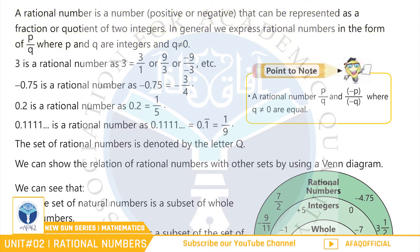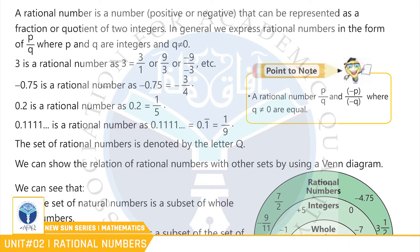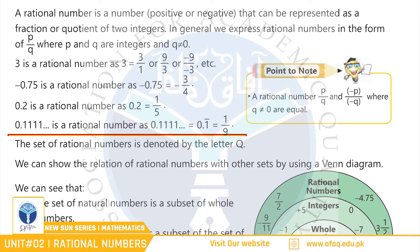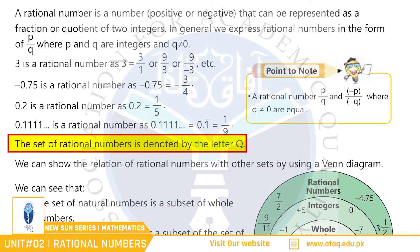جیسا کہ 1 over 2، 2 over 5، وغیرہ. Rational numbers کو letter Q سے denote کیا جاتا ہے.